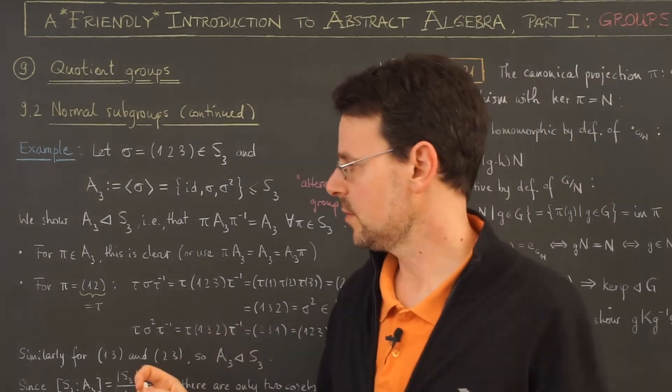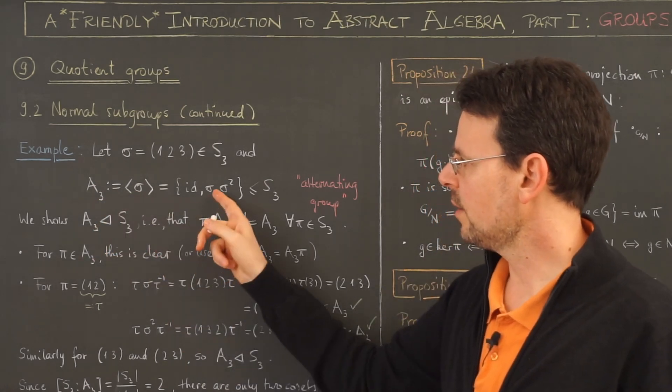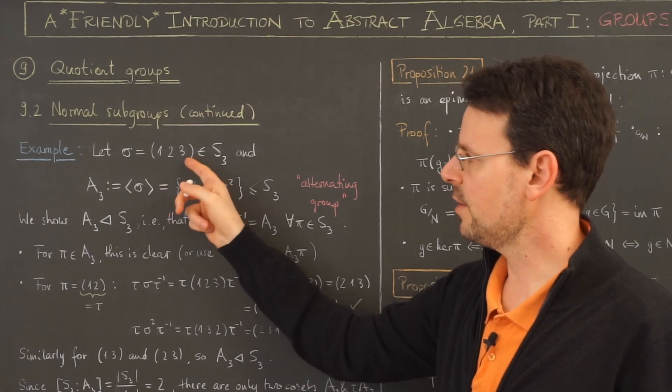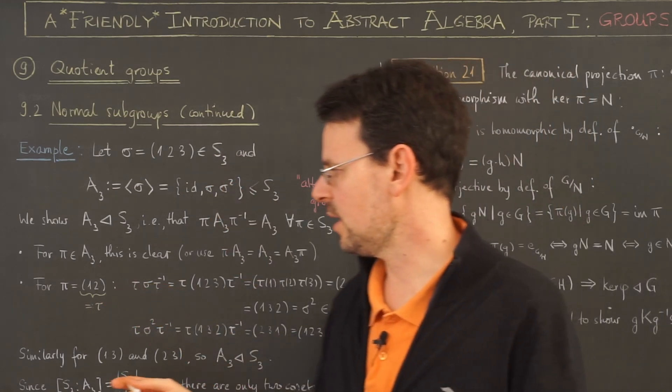Alright, so let's consider a permutation that is not an element of A3. Now this here is a three cycle, this is the other three cycle (1,3,2), and of course I can take the identity.